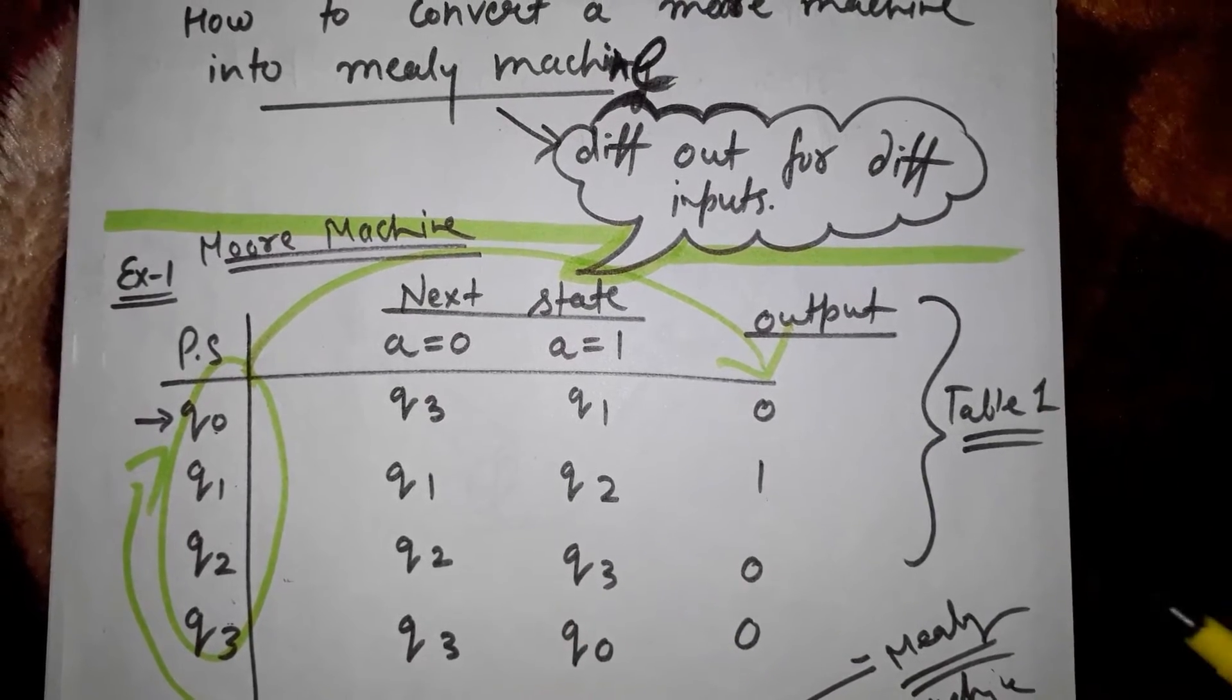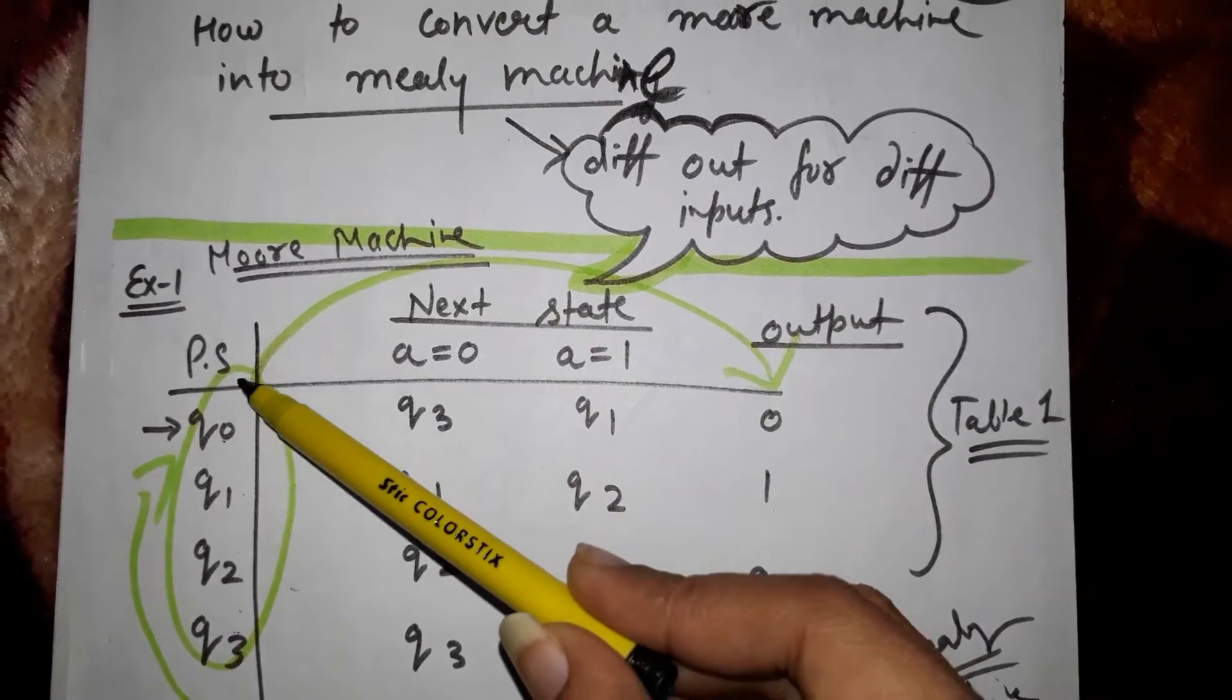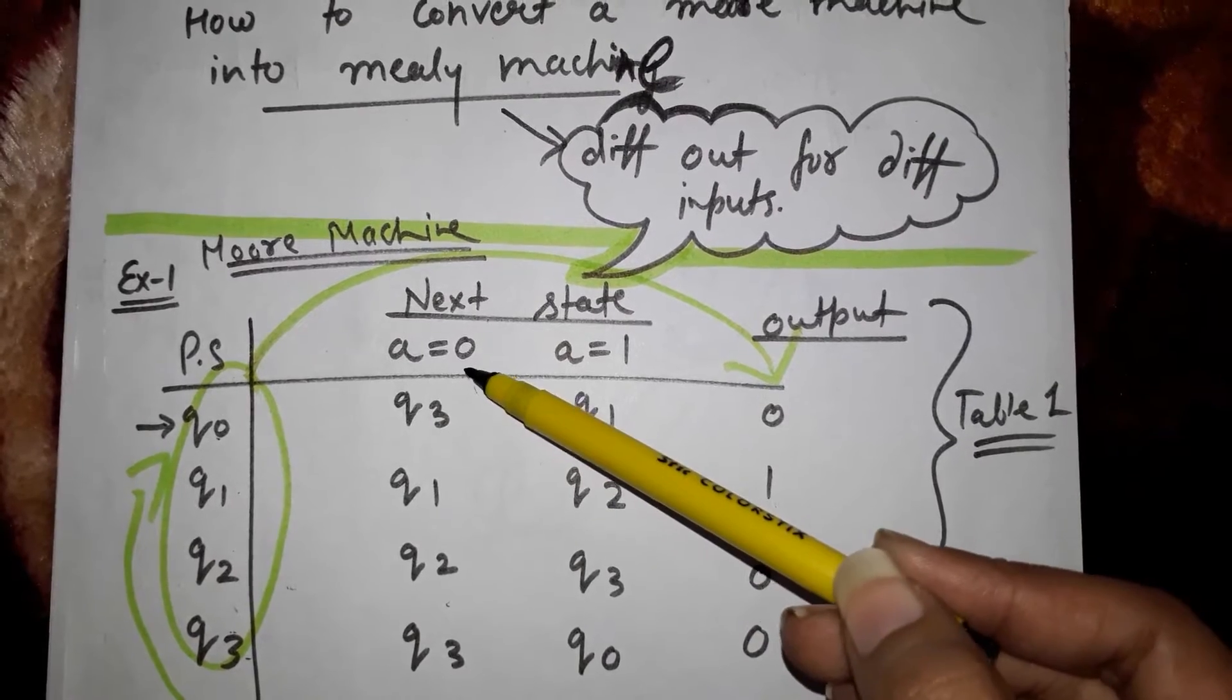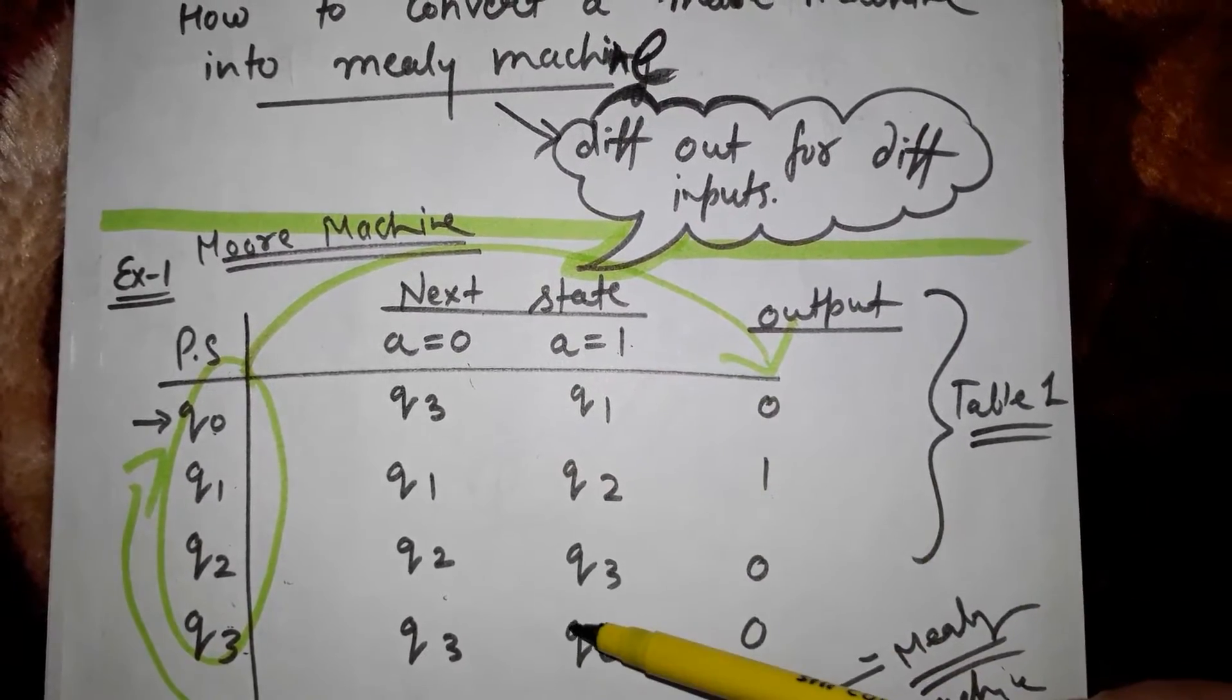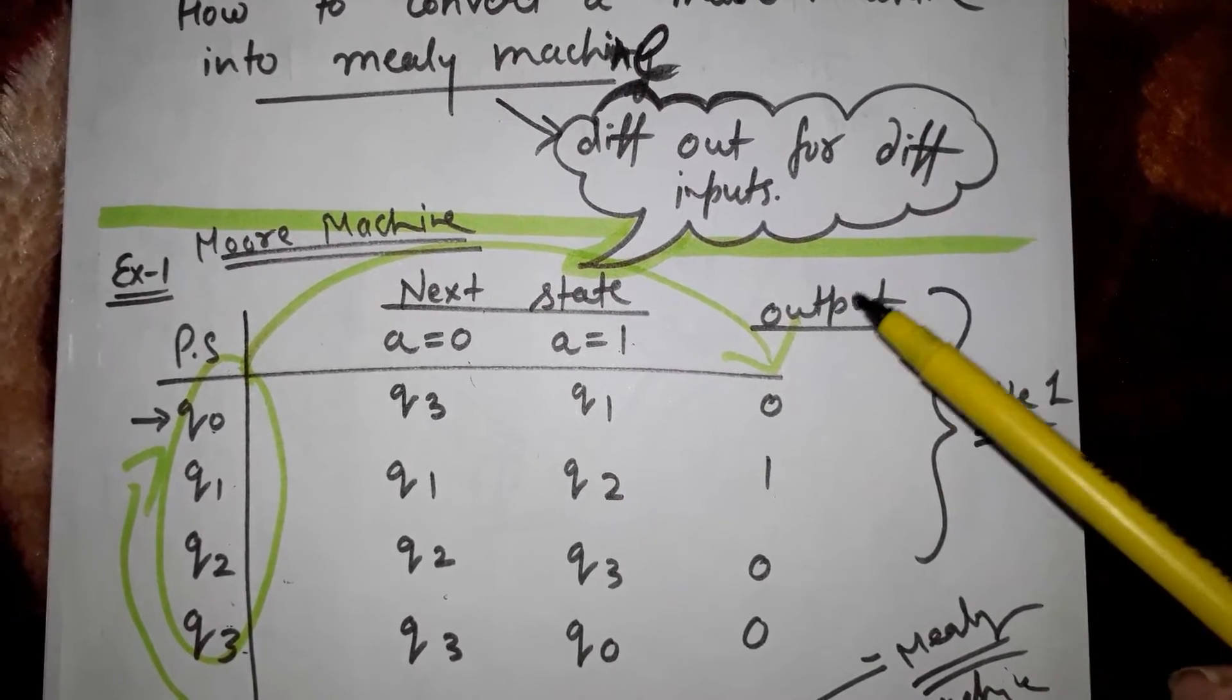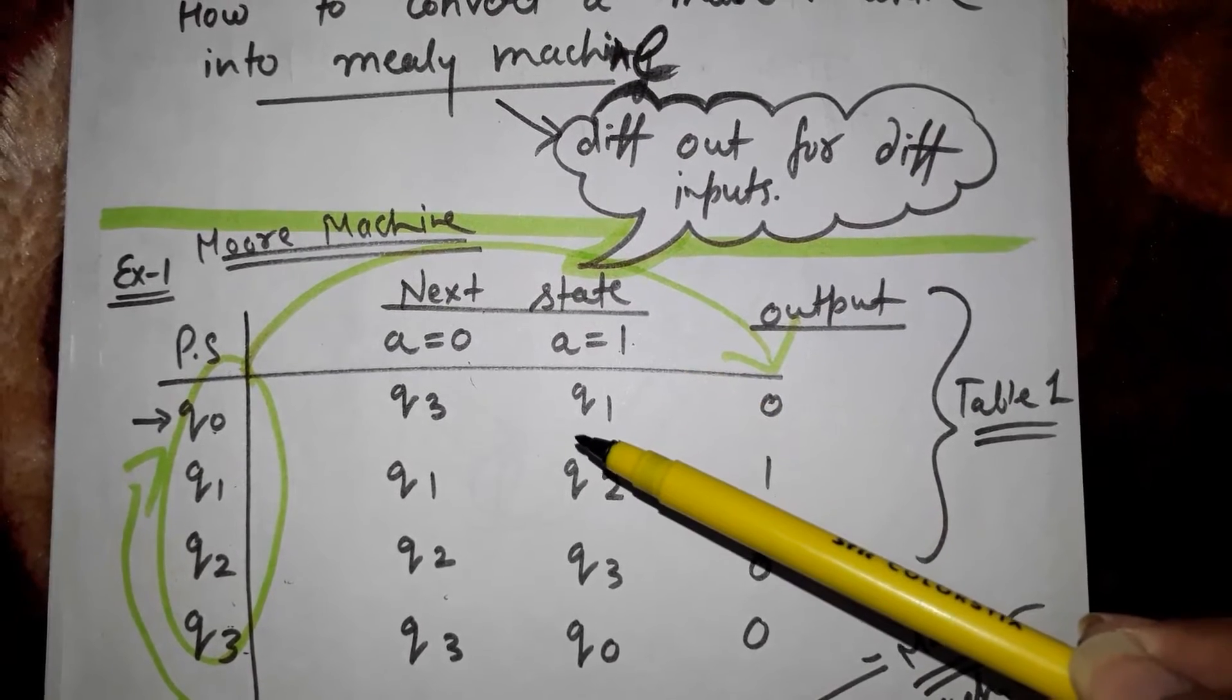table where the present states remain the same, and next states for input zero and input one remain the same, but the output would be changed. Because in a Mealy machine, outputs are associated with transitions. Now make another table here.